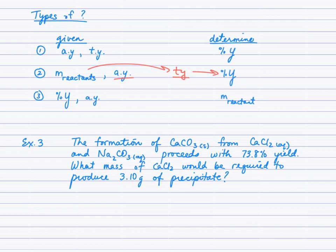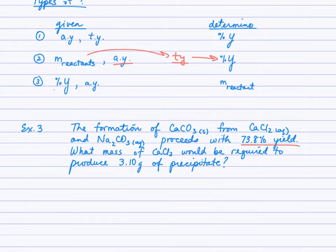The question looks like this: the formation of calcium carbonate from calcium chloride and sodium carbonate proceeds with 73.8% yield. What mass of calcium chloride would be required to produce 3.10 g of the precipitate? We've been given the percent yield, and 3.10 g is what we physically hold at the end of the experiment — that is the actual yield. We need to figure out the mass of calcium chloride, the reactant.